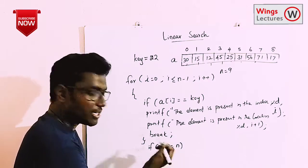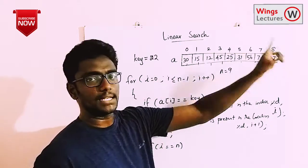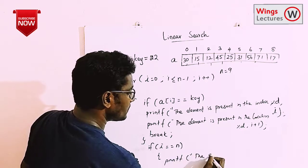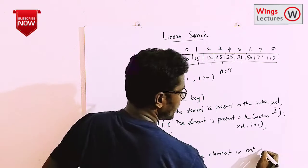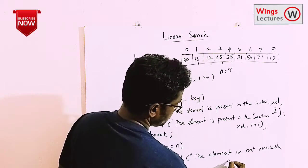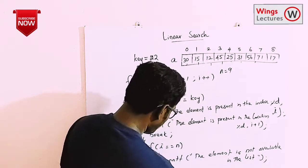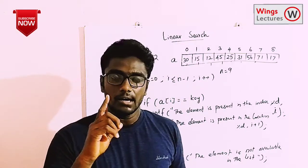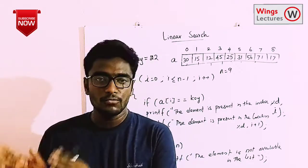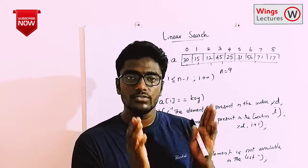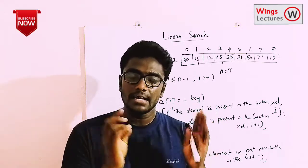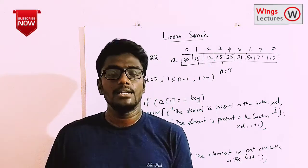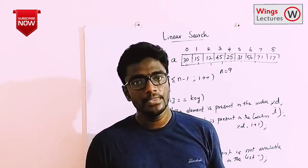The condition is: if i == n, when it reaches the last position, we can stop the process and print that the element is not found. That's the whole logic of linear search. The main thing is: linear search starts scanning from the beginning of the list, goes until we find the element, and otherwise stops at the position of the last data.